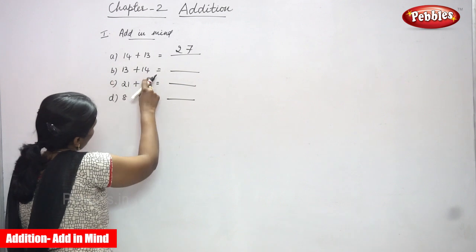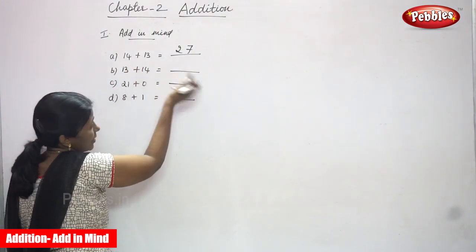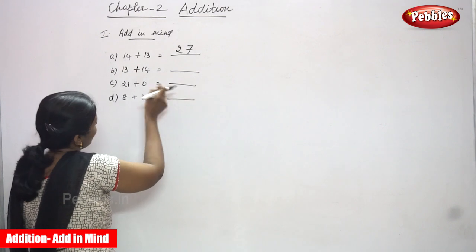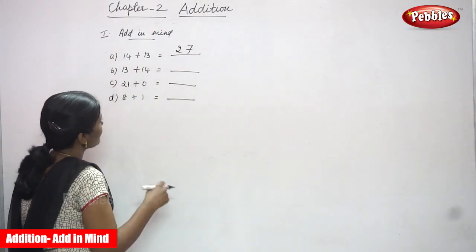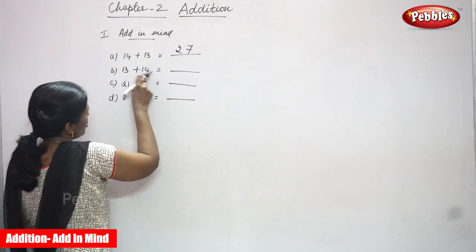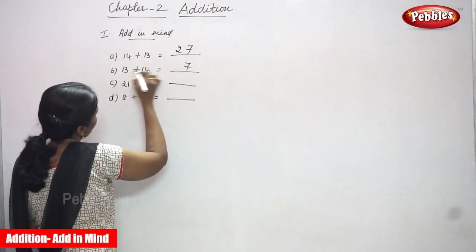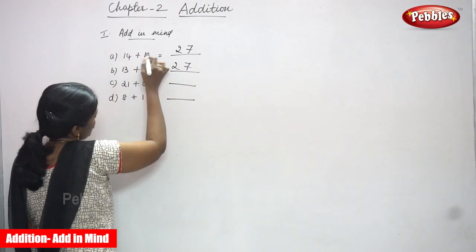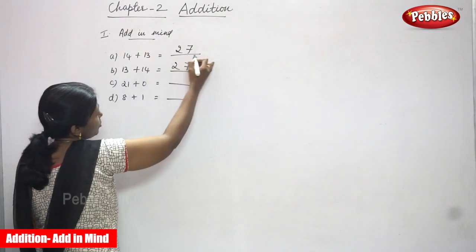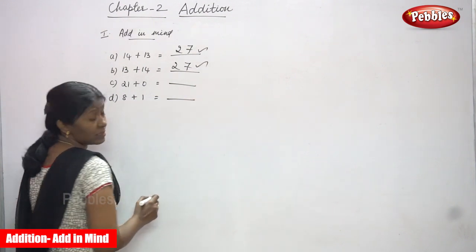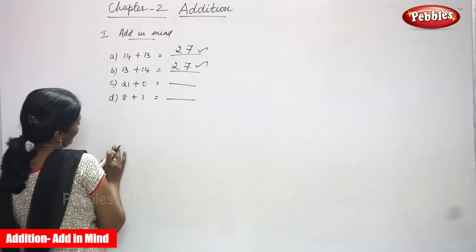Now I am going to do 13 plus 14. I am changing the order while adding. If you change the order, you can get the same total. So first I am going to add with ones: 3 plus 4 is 7. Again, 1 plus 1 is 2. See, I am changing the order while adding but you get the same sum. That means the total is same. The first rule is satisfied.